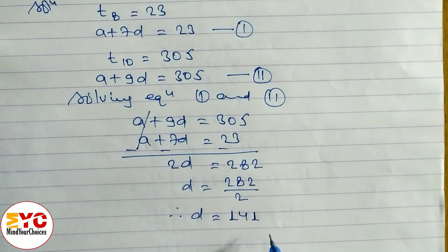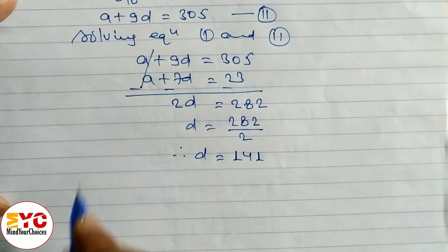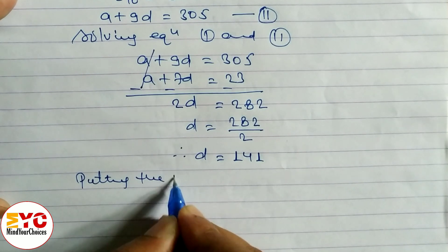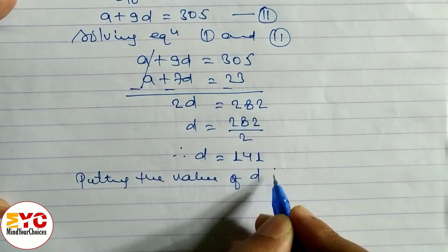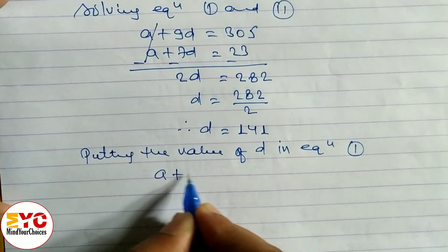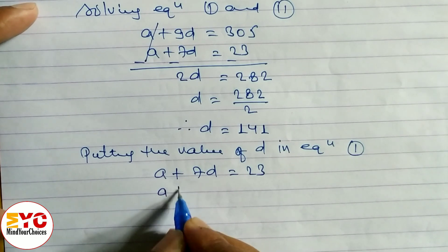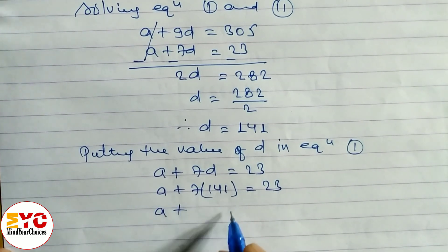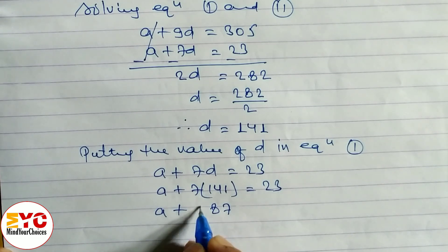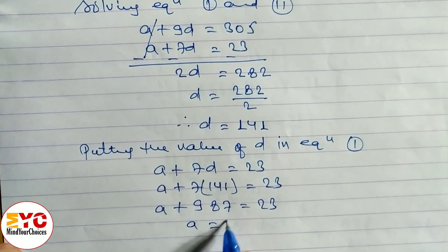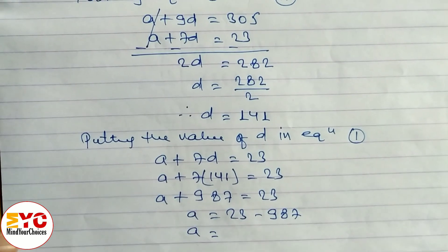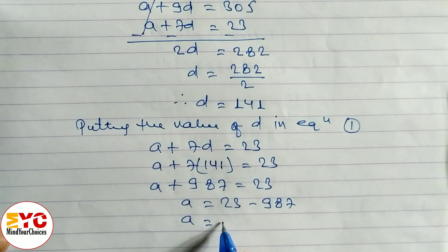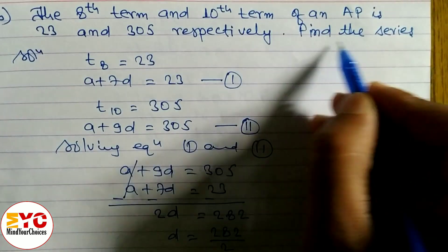Now putting the value of d into equation 1: a plus 7d equals 23, so a plus 7 times 141 equals 23. That gives a plus 987 equals 23, so a equals 23 minus 987, which gives a equals minus 964.